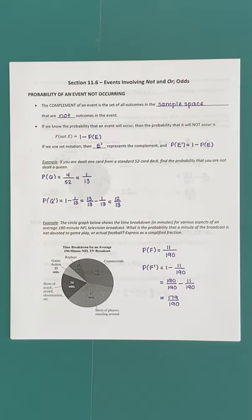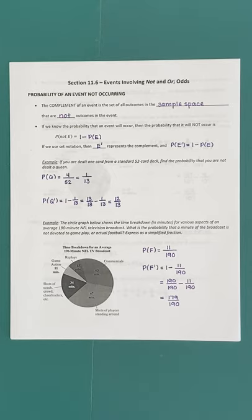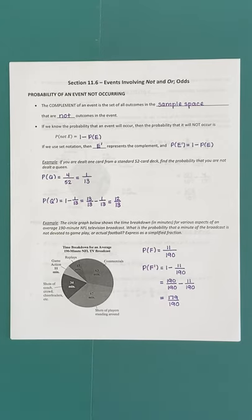In this video we're going to extend what we know about probability to represent situations where an event is defined in a more complicated manner. Specifically, we'll talk about an event not occurring versus occurring, or the possibility that one or another event can occur. We'll also talk about odds, which are closely related to these concepts.